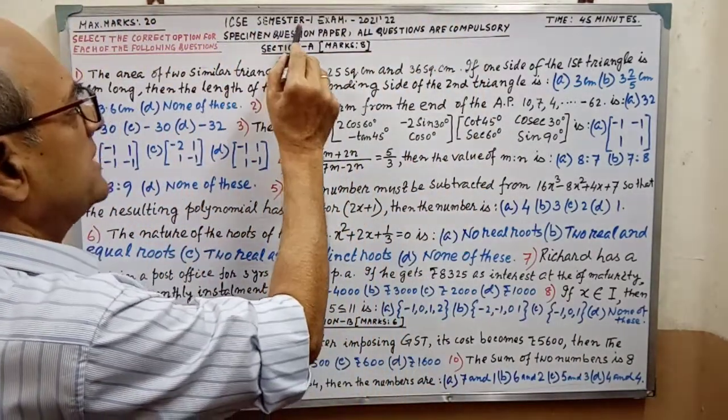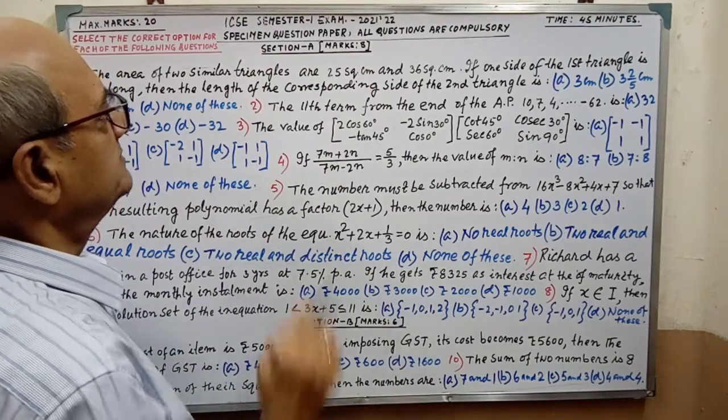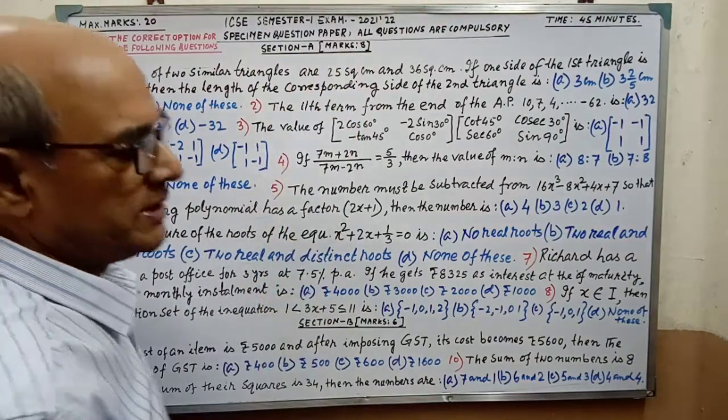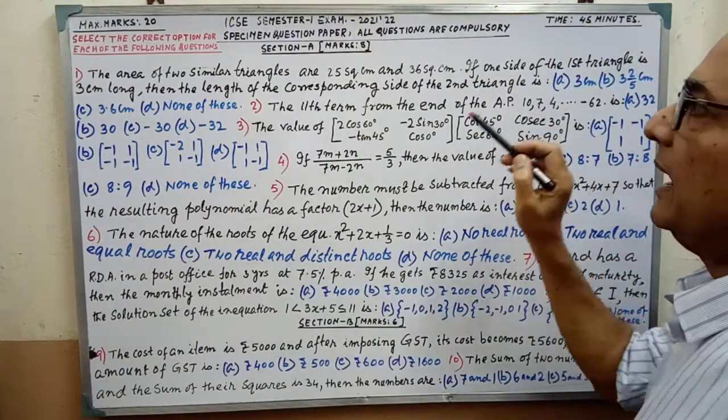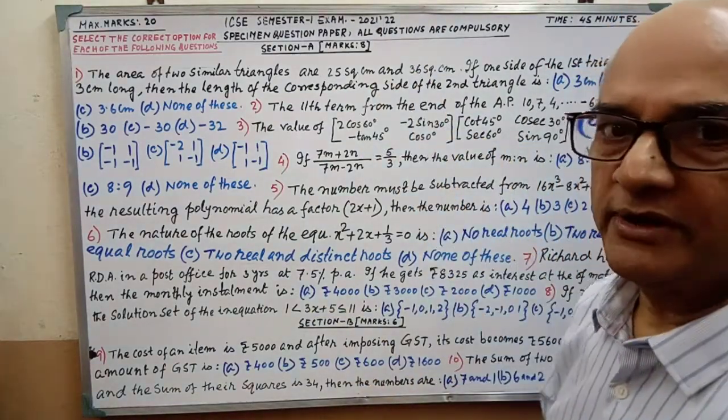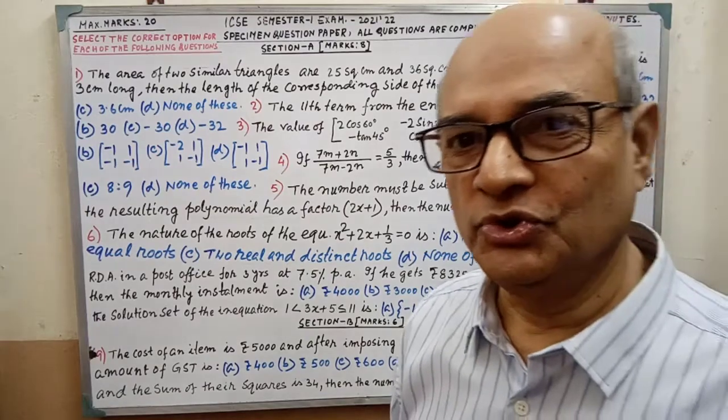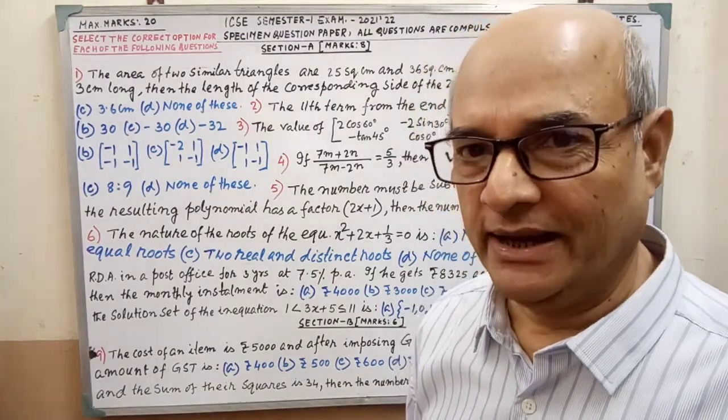ICSC semester 1 exam, specimen question paper. All questions are compulsory and the total question is divided into 3 sections: Section A, B and C.